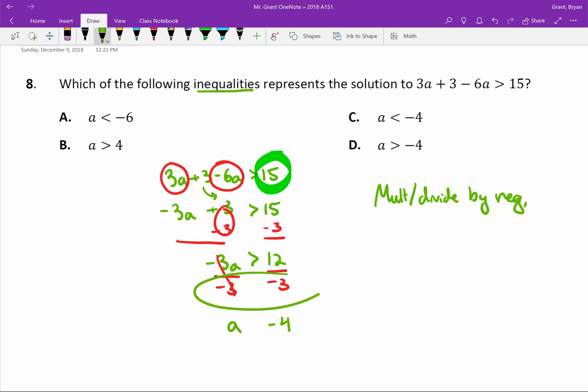And notice we did divide by a negative here, then you need to flip the inequality sign. So, because I did divide by a negative, I need to flip the inequality from a greater than to a less than, and we've now found our answer, a is less than negative 4, which is C.